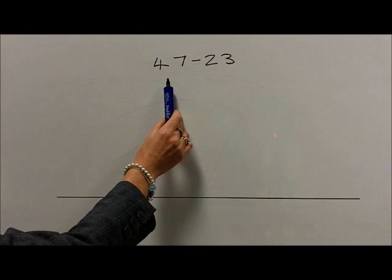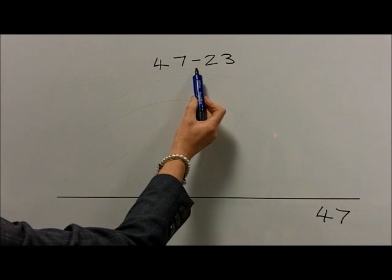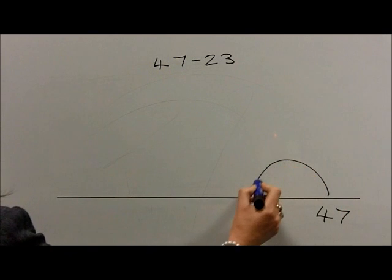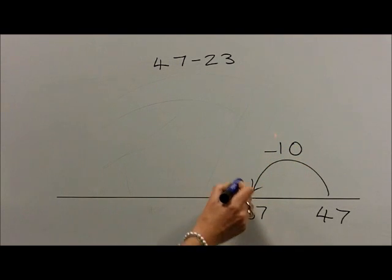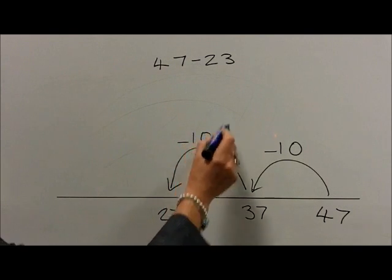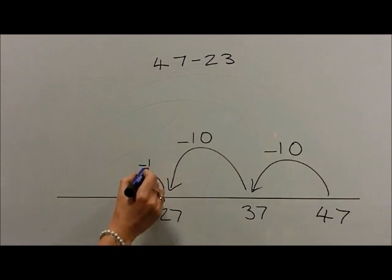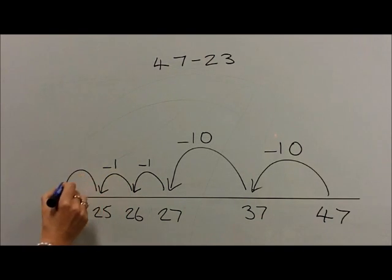they would start at the number 47 on the right-hand side of the number line, then count back in tens until they've counted back 20. So they count back 10 to reach 37 and count back another 10 to reach 27, and then count back in ones. So they need to subtract 3 ones: minus 1 to get to 26, another 1 to get to 25, and one more to get to 24.